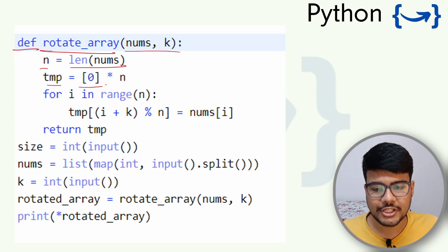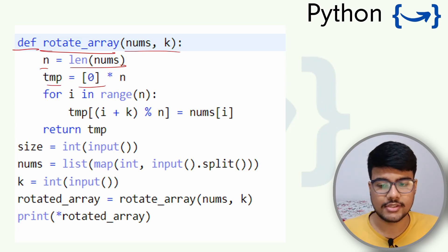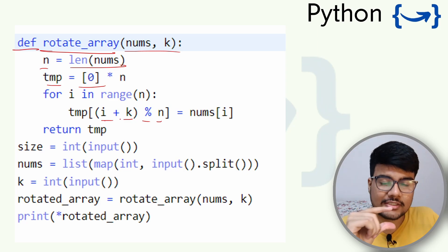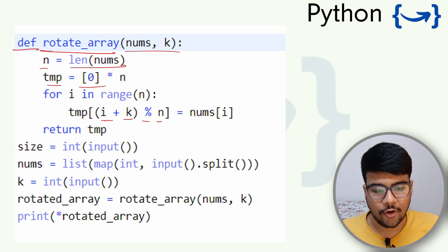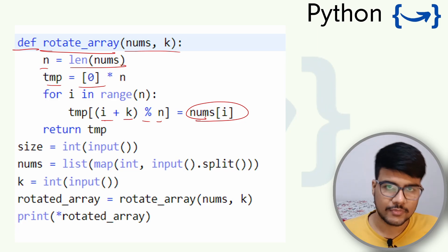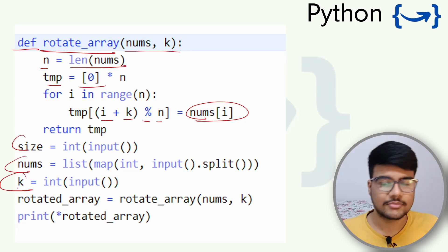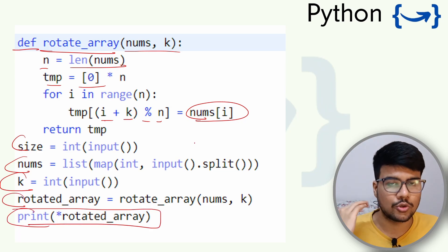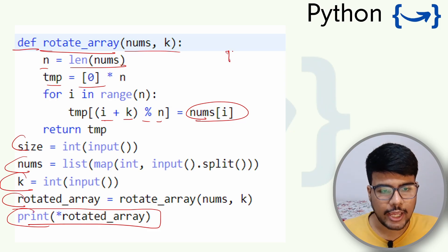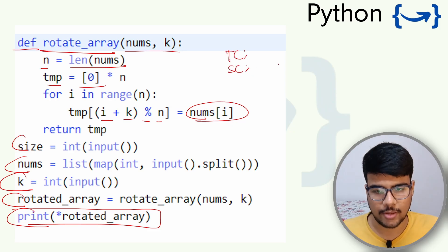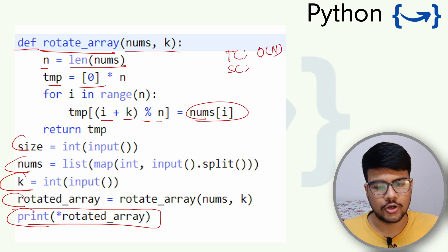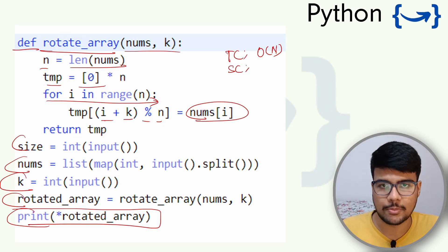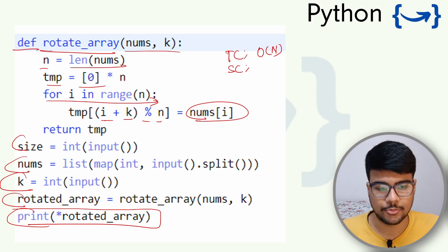The time complexity of this second approach is O(n) — iterating through the array once — which is more efficient than the reverse approach's O(3n) in practice, though both simplify to O(n). The rotated array is printed in a space-separated manner as required by the problem.